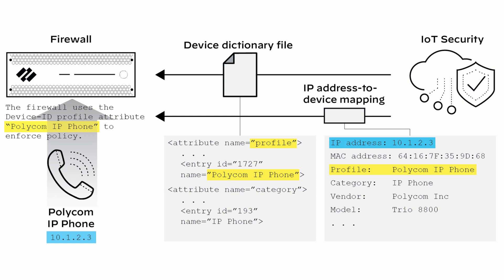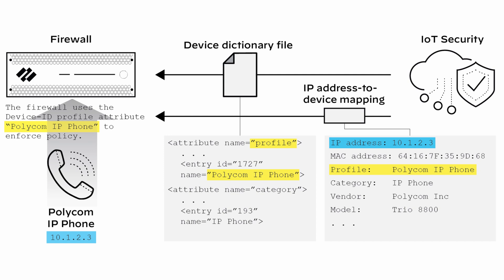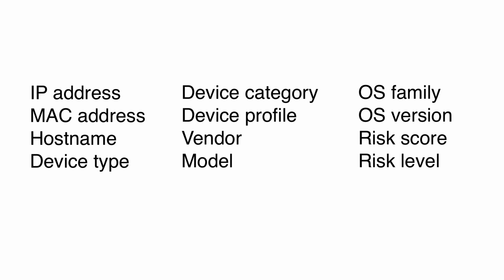After IoT security identifies a device, it bundles the following set of identifying characteristics about it. Firewalls poll IoT security for these IP address to device mappings every second, and IoT security returns mappings that it has identified as active within the last hour.